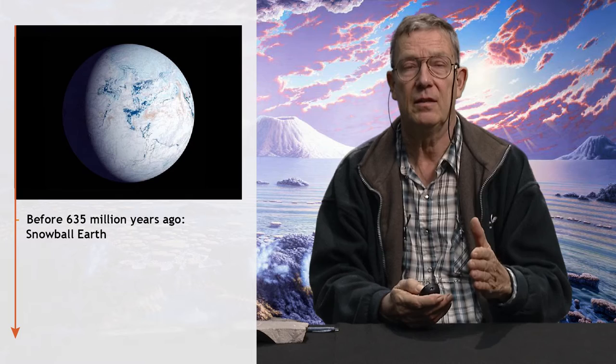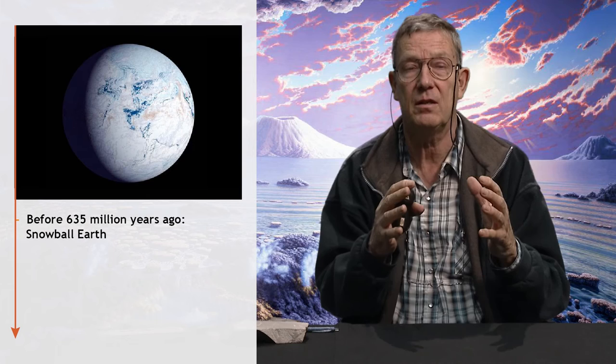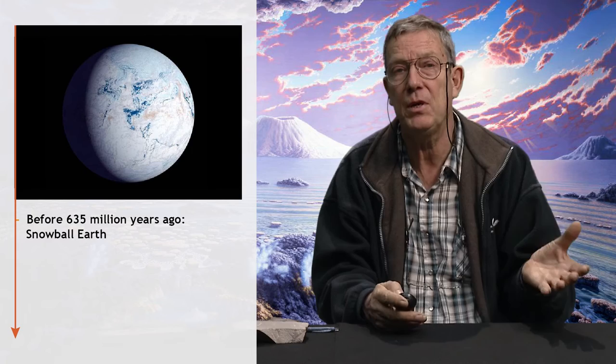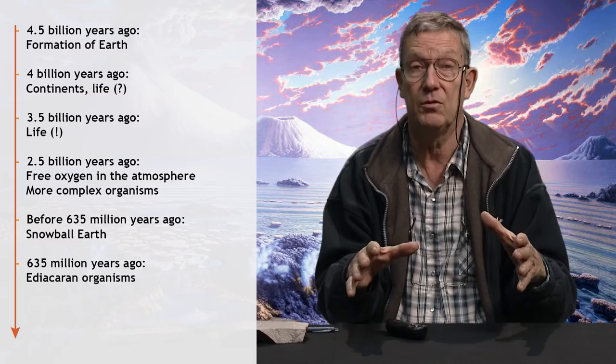Right after the first melting of the ice, we see clumps in the rock record of cells — possibly multicellular. They quickly develop into what we call the Ediacaran world. We have imprints of these organisms in rock, but they're all soft-bodied: jellyfish-like forms. They're bilateral and radially symmetrical, but they have no protection at all — no hard parts.